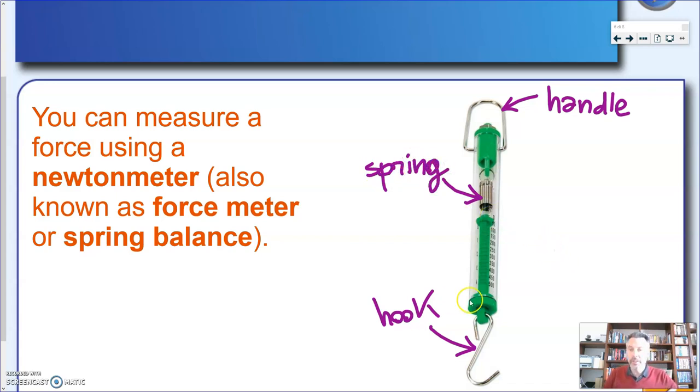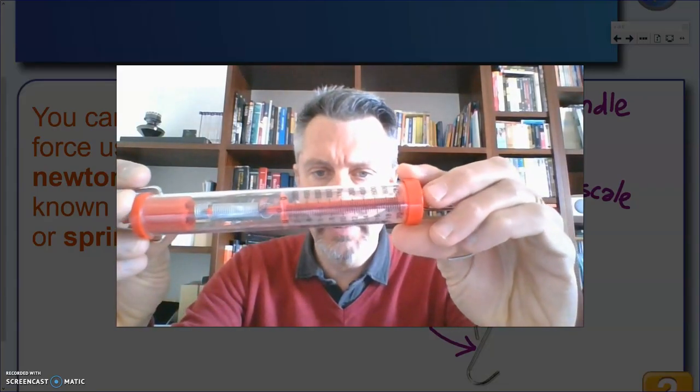Then you can notice in this picture that there's a series of numbers here. Actually the spring balances we're using have two sets of numbers. We will be interested in one of them, which is in the appropriate unit for measuring force. But this part here, this whole part here that gives you the reading of your force, is called the scale.